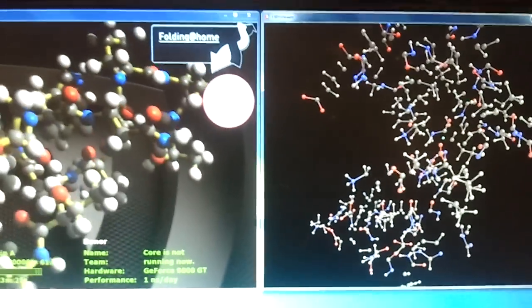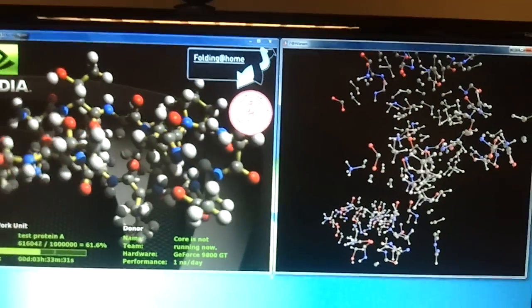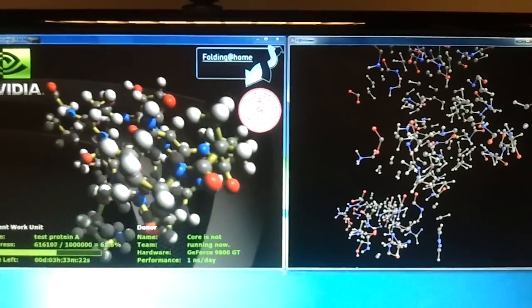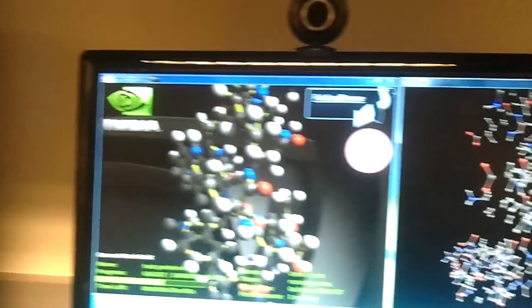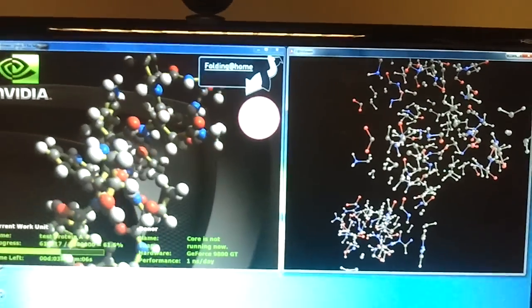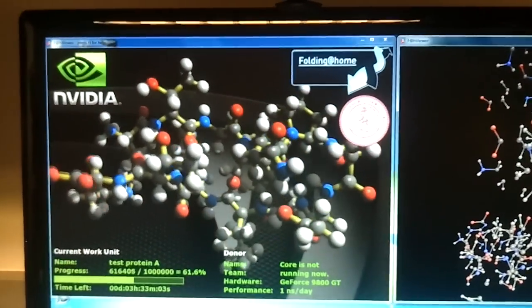So by donating our CPU cycles, we're able to run these simulations. What happens is that my computer over here downloads a work unit and processes the work unit. It runs the work unit in a simulation, and this is what you're seeing here.